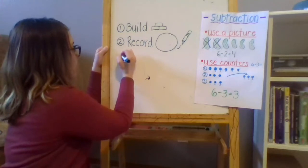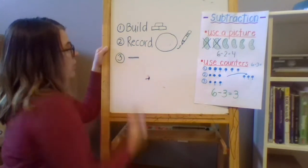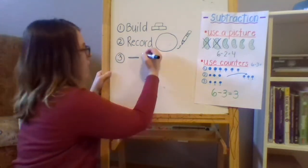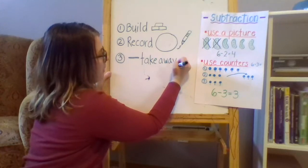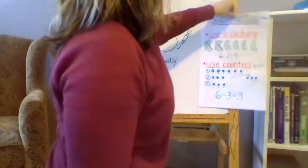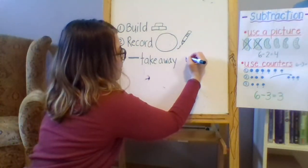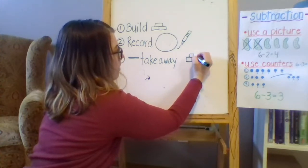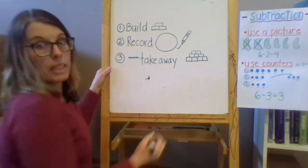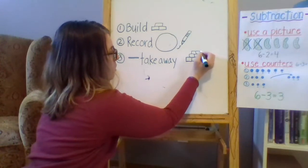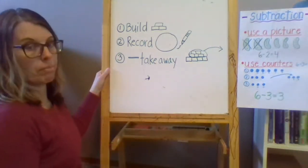Build, record. Step number three, take away. So you're going to actually just move this out of the way. Step number three is take away. So if this is my block structure or my Legos or whatever I built with, I'm going to take some away. Maybe I'll choose to take away this many. Take them away.